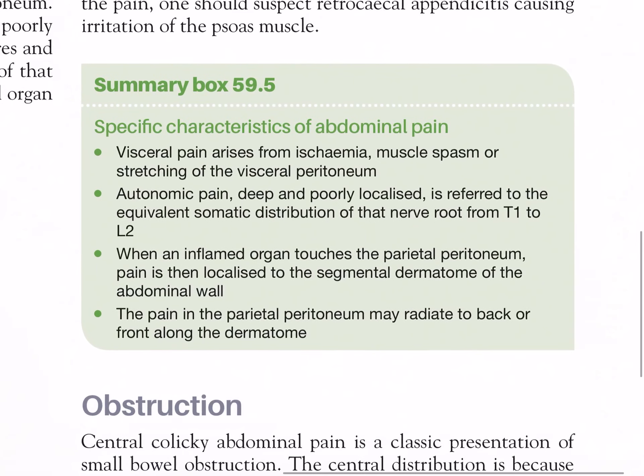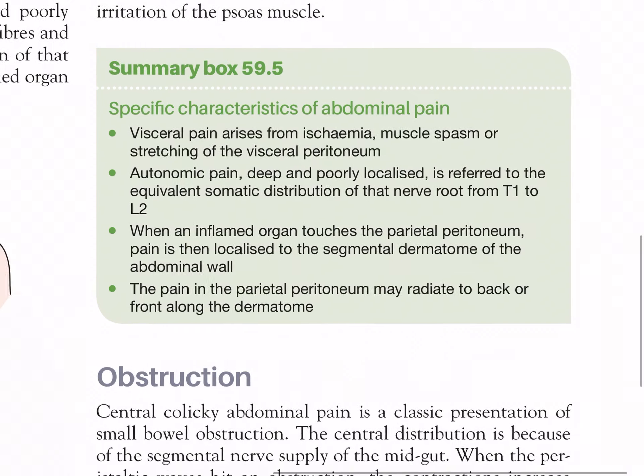Summary box 59.5 — Specific characteristics of abdominal pain: visceral pain arises from ischemia, muscle spasm, or stretching of the visceral peritoneum. Autonomic pain, deep and poorly localized, is referred to the equivalent somatic distribution of that nerve root from T1 to L2. When an inflamed organ touches the parietal peritoneum, pain is then localized to the segmental dermatome of the abdominal wall. Pain in the parietal peritoneum may radiate to the back or front along the dermatome.